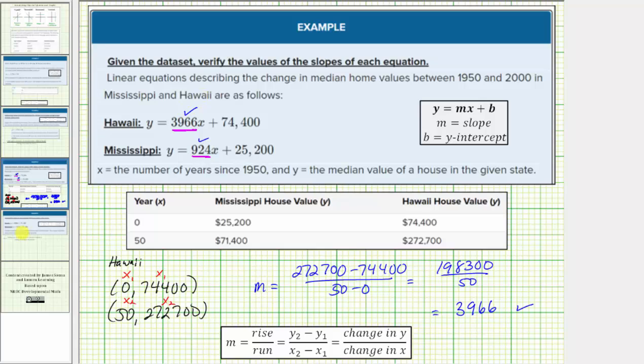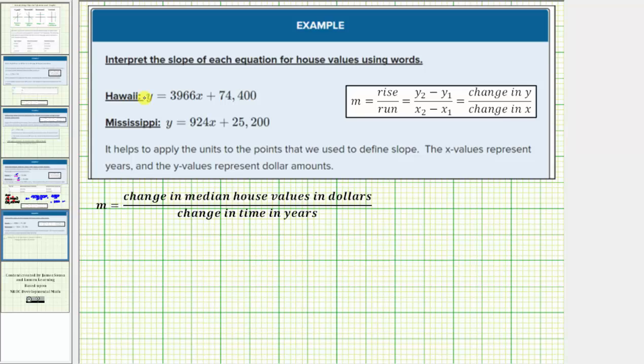Now for the second part of this question, we're asked to interpret the slope of each equation for house values using words. Remember in general, the slope is equal to the ratio of the change in y to the change in x. But in this case, y is the median home value in dollars and x represents time in years. So in this case, we can say the slope is equal to the ratio in the change in the median house values in dollars to the change in time in years.